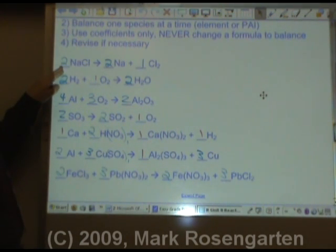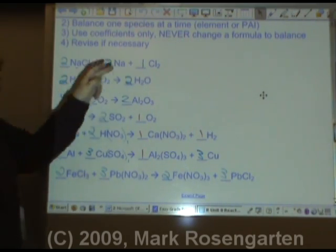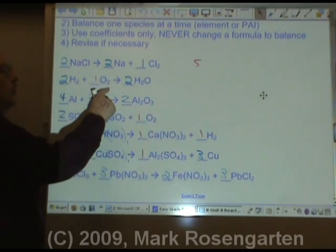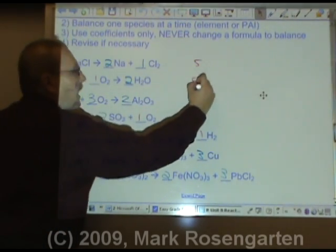So, the sum of the coefficients in this reaction, 2 plus 2 plus 1, is 5. The sum of the coefficients in this reaction, 2 plus 1 plus 2, is 5.